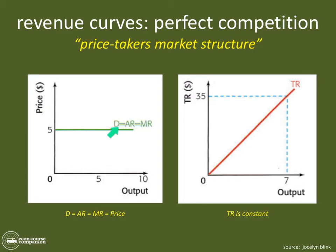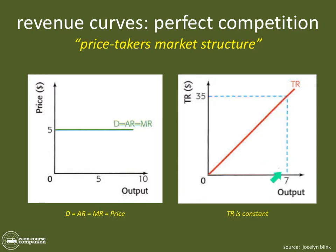So in a price takers market structure — perfect competition — there are three curves that are all the same horizontal line: the demand curve, average revenue, and marginal revenue curve. Total revenue, because it's always price times quantity with a consistent price, increases at a constant rate. For example, if the price is five dollars and the output is ten units, total revenue is fifty dollars.